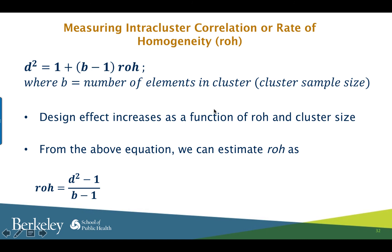Therefore, one way to reduce design effect is to take only a subsample of the elements in the cluster and not sample all elements within that cluster. But then you will need to increase the number of clusters to maintain the overall sample size. The design effect is highest when rho equals 1 and when you sample all elements within that cluster — this is the worst case scenario. So instead of taking all elements within the cluster, if we subsample, the design effect will be lower. However, you will then need to increase the total number of clusters, which will increase your cost.